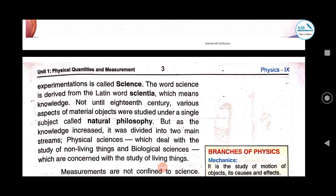Physical sciences deal with the study of non-living things, and biological sciences are concerned with the study of living things. Physical sciences cover knowledge about non-living objects — for example, a chair, book, table, car, aeroplane — any non-living objects existing in our society. Biological sciences cover knowledge about humans, animals, insects, birds, fisheries — all living things existing in the universe belong to the domain of biological sciences.